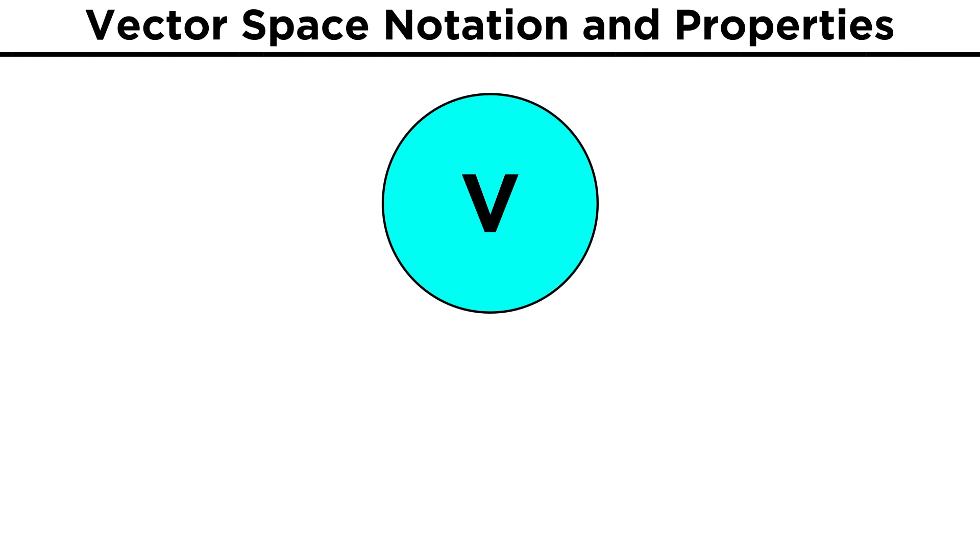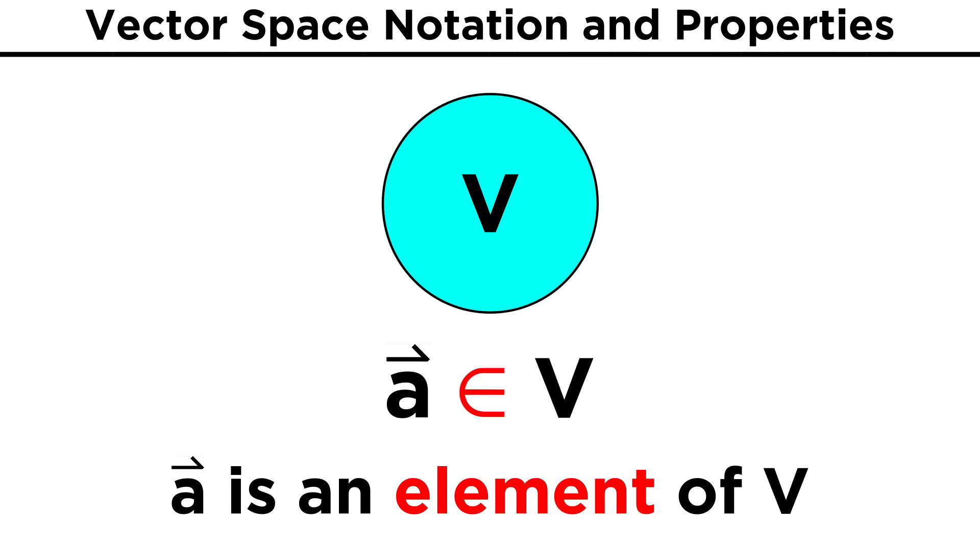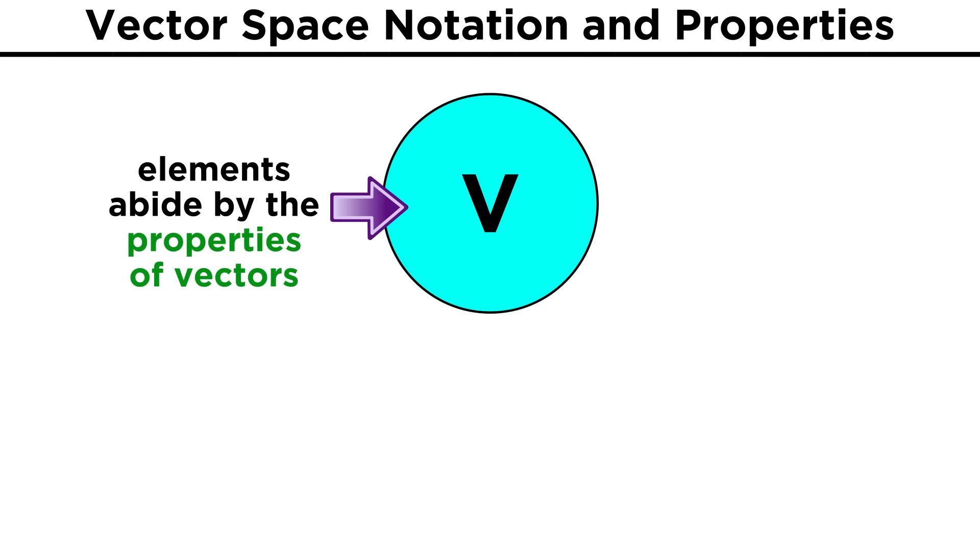Before defining anything, let's just introduce some notation. Let's call our vector space V. If some vector is a member, or element, of V, we can denote it with this symbol here, so the following means that a is an element of V.